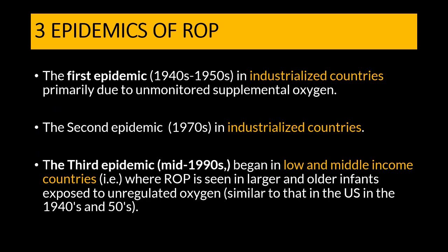To understand the pathophysiology of ROP, it is very important to understand the three epidemics of ROP. The first epidemic happened in the 1940s to 1950s in industrialized countries with good neonatal care, and it was primarily because of the unmonitored usage of supplemental oxygen in newborn babies. When this was recognized and oxygen supplementation was regulated, ROP virtually disappeared.